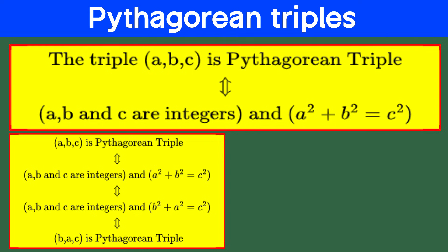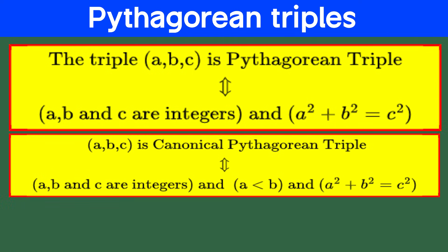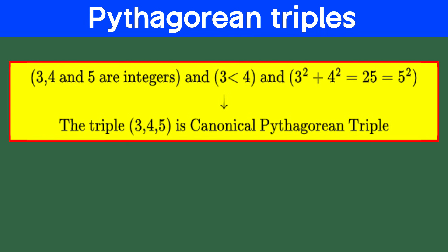But wait, we're not here for duplicates, this isn't math's version of a rerun. To keep things tidy, we add a simple rule, we will say the canonical Pythagorean triple is where a is less than b. After all, numbers cannot argue over who's smaller, it's math, not a reality TV show. With this rule in place, we've got a clean and efficient way to explore the beauty of Pythagorean triples. Ready to dig deeper? Let's go.